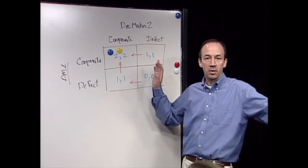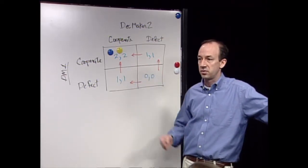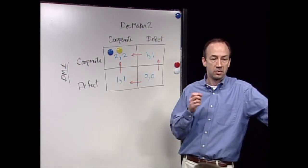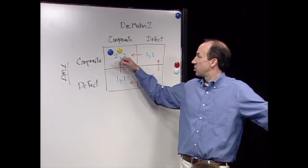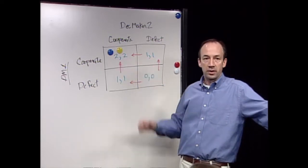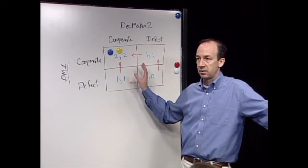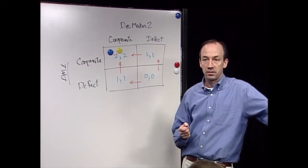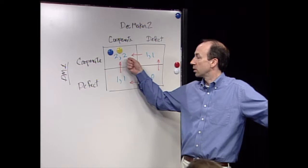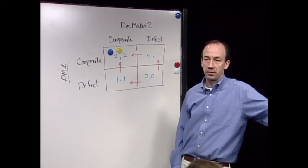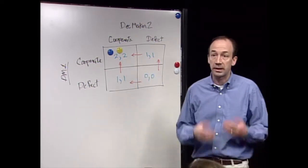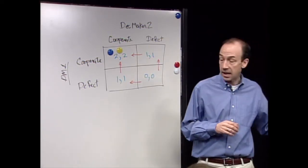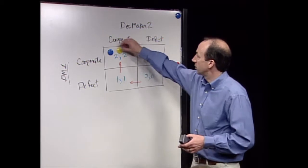The Pareto optimal means there is no solution that's better for decision maker one that isn't worse for decision maker two. Both Pareto optimal and Nash equilibrium - that makes this a very powerful game. Everybody's motivated to cooperate, and the collective good is also achieved at this point. It would be wonderful if all our decisions looked like this. Unfortunately, not all games look like that.